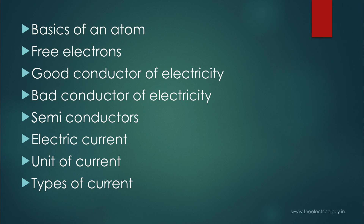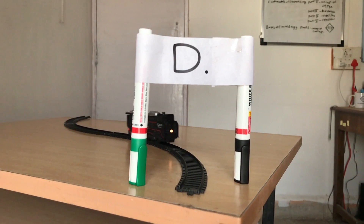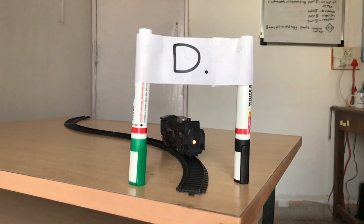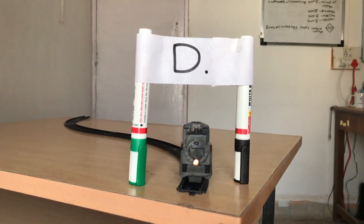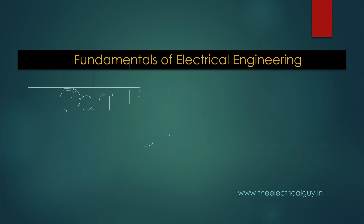Hello everyone. In this video we are going to learn about all of these topics. To understand what is electric current, it is very important to understand what is an atom and what is an electron. So first we will learn about that and then we will learn about electric current with our simple train analogy. To get all of these details in the easiest way, you need to watch the video.